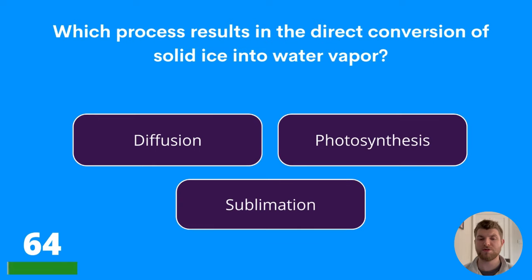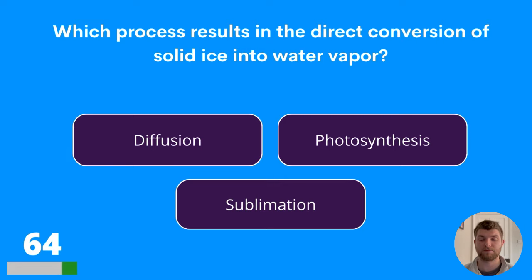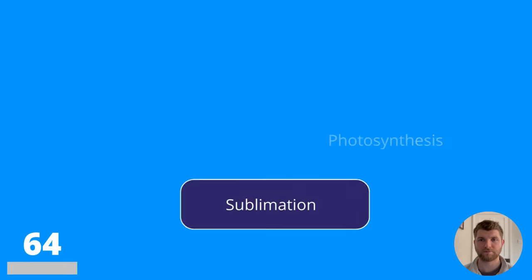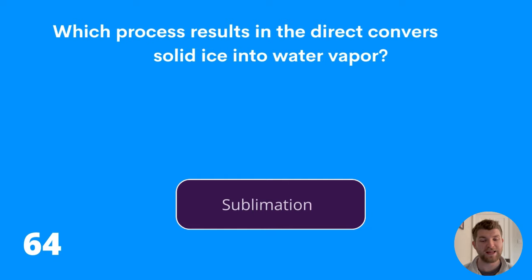Question sixty-four: which process results in the direct conversion of solid ice into water vapour? Diffusion, photosynthesis, or sublimation? The answer is sublimation.